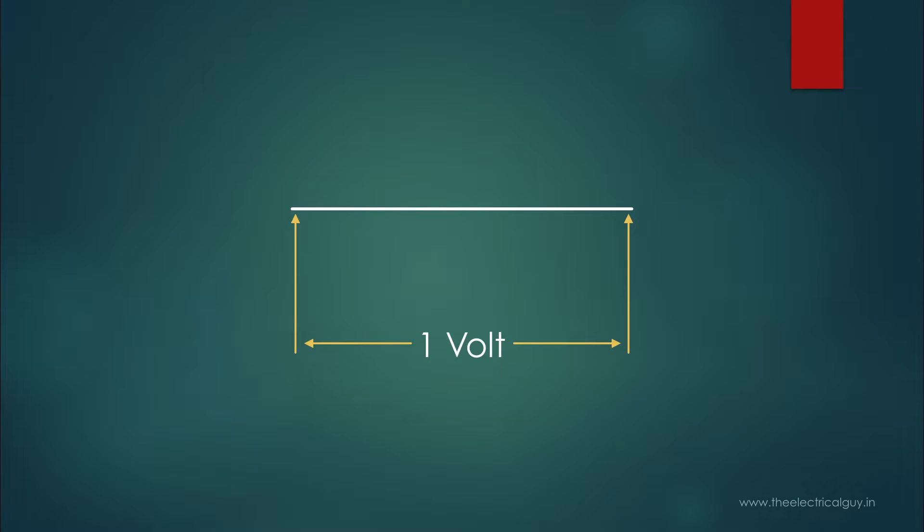What we did? We simply applied 1V across this wire and 1A current flows through it, which means the wire has a resistance of 1 ohm.